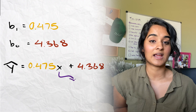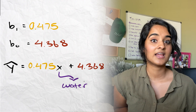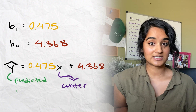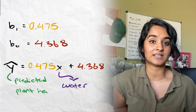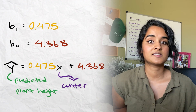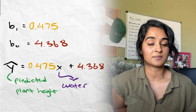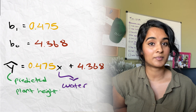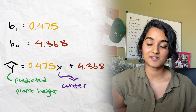We have y-hat = 4.36 + 0.475x, where x is the amount of water and y-hat is the predicted height of the plant in inches. Notice that because our scatterplot has a positive slope, our b1 value is positive.